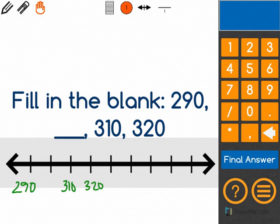I know when I skip count, I always follow a pattern. And I can see that for 310 and 320, I went up by 10.